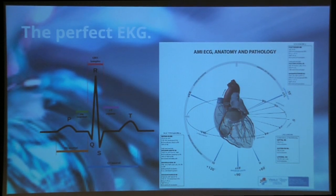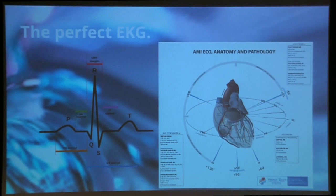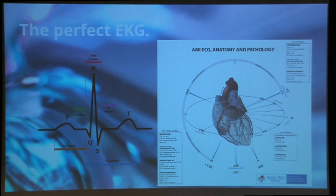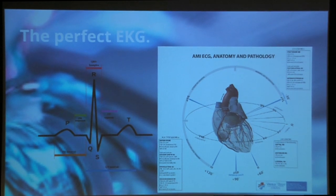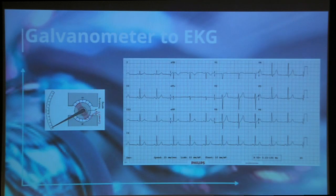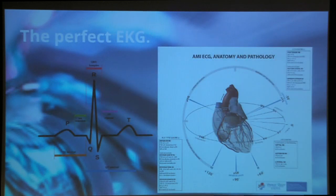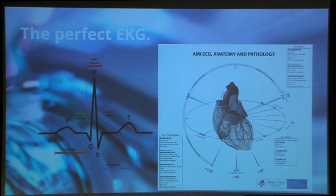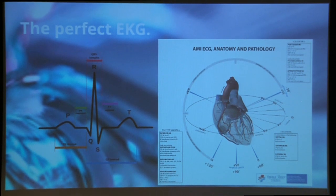This is what a perfect EKG rhythm looks like. When you put all the leads on, it gives a three-dimensional view of the heart — like wanting to see all sides of a car after an accident. The leads placed in different parts of the body give you that 3D image, and once you learn which lead represents which portion of the heart, you can determine whether a problem is in the anterior or posterior portion.